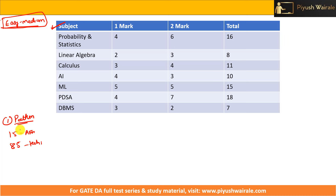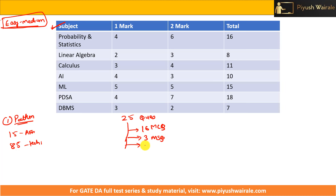One important observation: out of 25 one-mark questions, 16 questions were MCQ, three questions were MSQ, and six questions were NAT type. NAT type questions means you need to do a calculation and put the accurate numerical answer. So six NAT questions were there in one-markers.